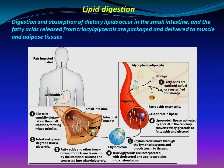Lipid digestion: digestion and absorption of dietary lipids occur in the small intestine, and the fatty acids released from triacylglycerols are packaged and delivered to muscle and adipose tissues. Fats ingested in the diet are emulsified by bile salts in the small intestine, forming mixed micelles.